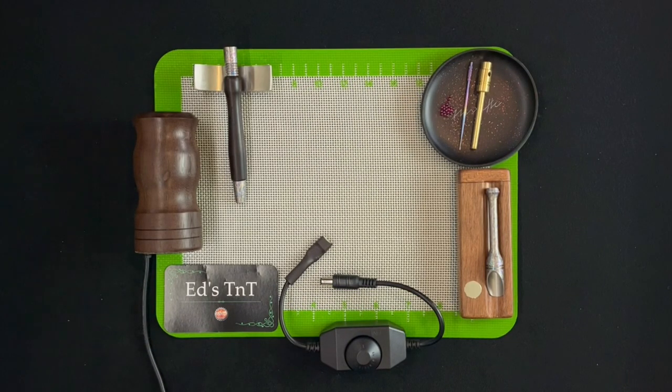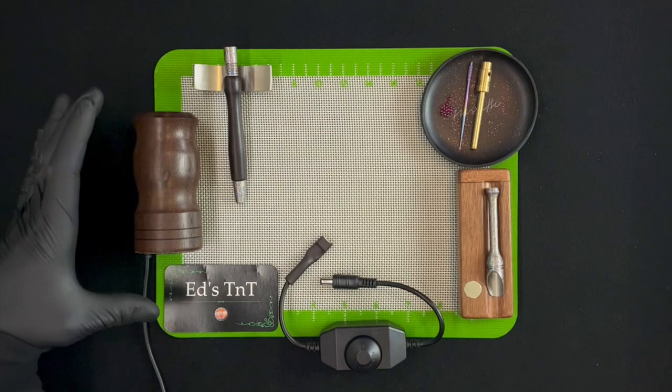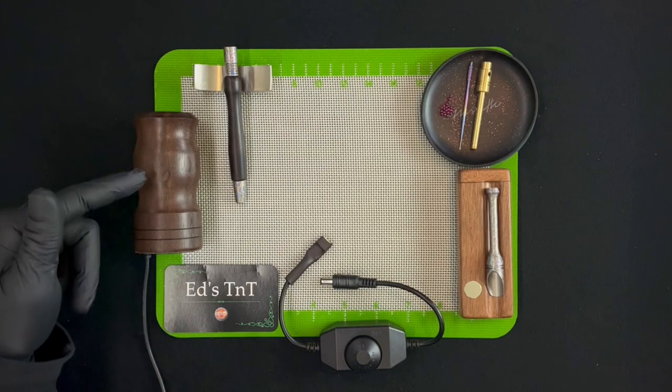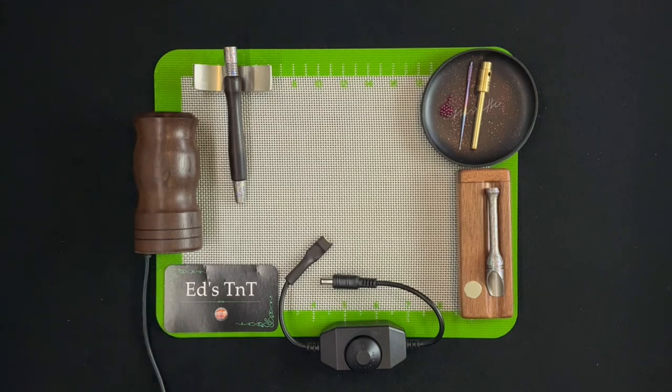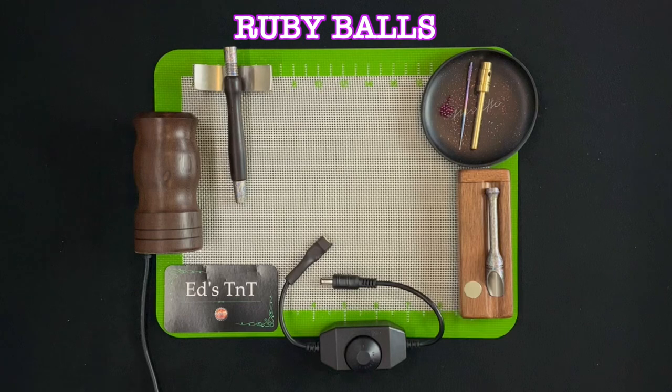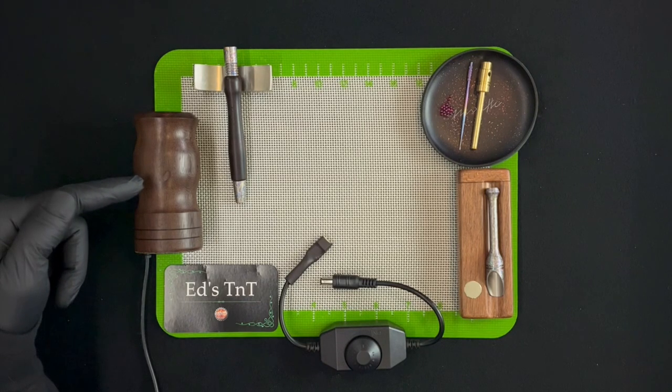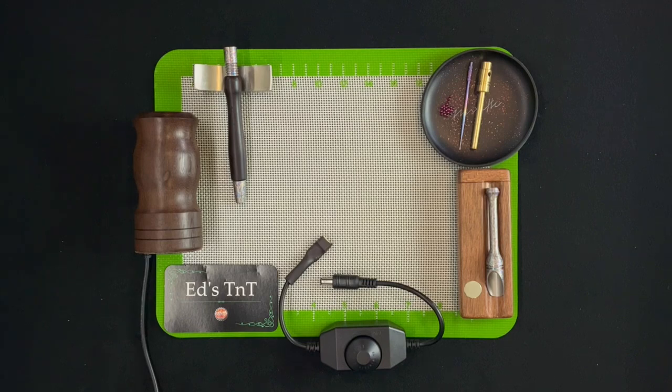What's up my fellow vapers, we are back with another power up, this time for the wood sense. We're going to be taking one of my favorite vapes, the wood sense from Ed's TNT, and we're going to be beefing it out with some ruby balls and making this a tiny injector vape.